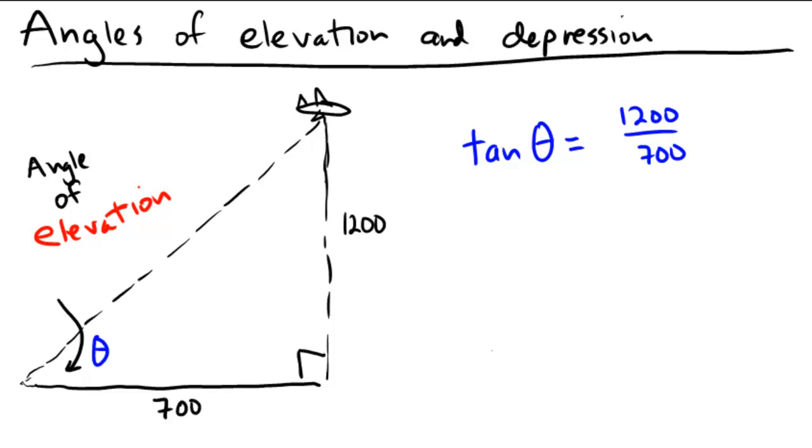So now if we wish to figure out what theta is, we need to undo the tangent. So we undo the tangent with the tan inverse operator. So we will have the tangent inverse of 1200 over 700.